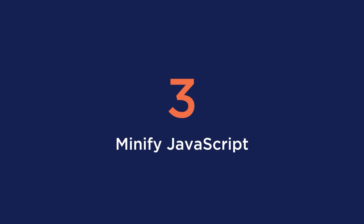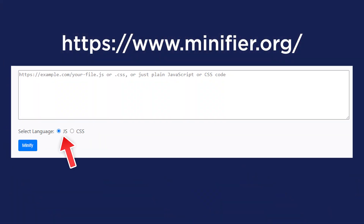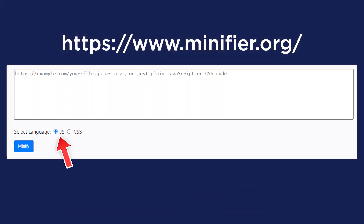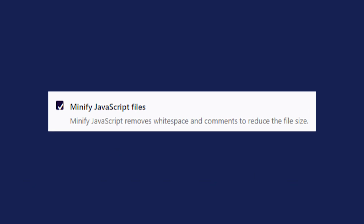Tip number three is to minify JavaScript. Minification refers to removing unnecessary and redundant code without affecting how the browser processes the data. In other words, the goal is to make the file much lighter by reducing the size of the code. For a manual solution, you can use a free online tool like minifier.org and simply tick the JS button. But for the fastest and easiest solution, with WP Rocket, all you need to do is check the minify JS files box and you are good to go.